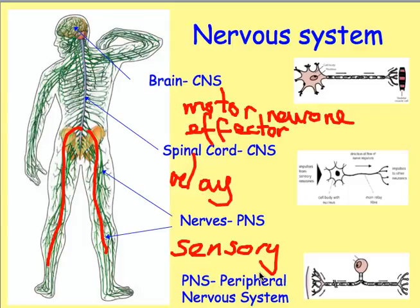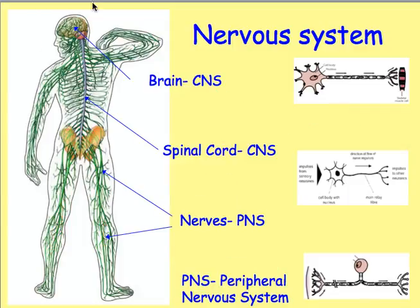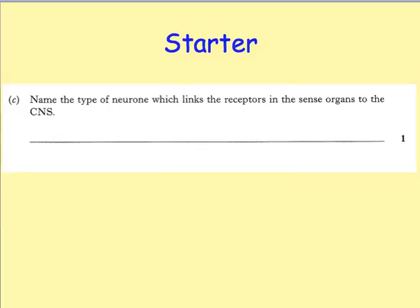From there, nerve impulses can be sent out to the motor neurons and have some kind of effect on the body. The relay neuron is in the middle of these two neurons to relay information from one to another. A past paper question asks: name the type of neuron which links the receptors in sense organs to the central nervous system. The answer is the sensory neuron.